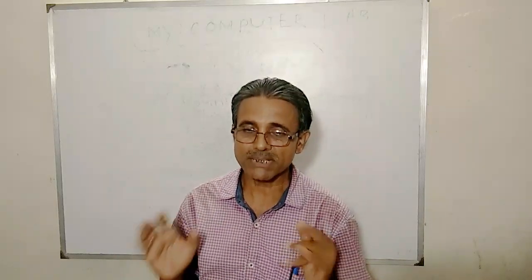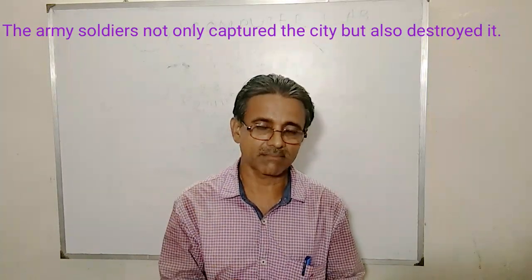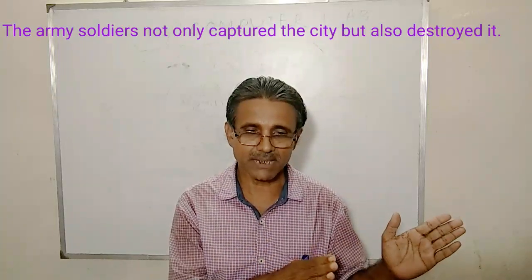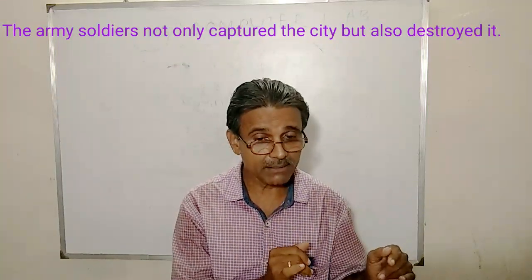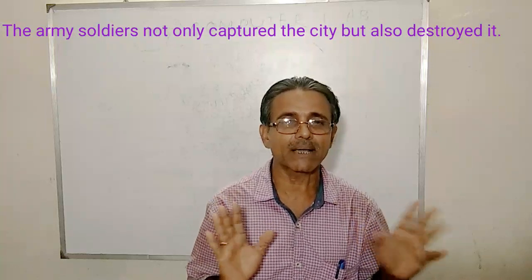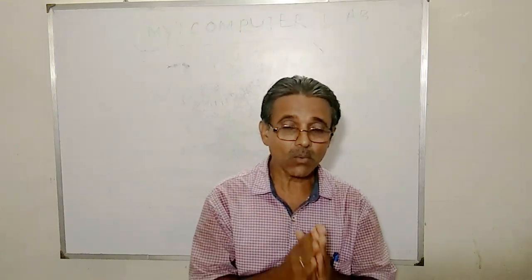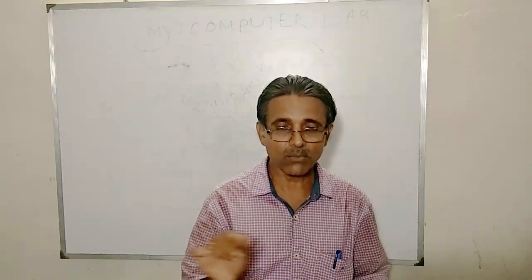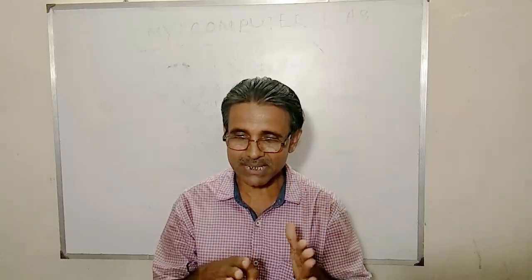For your better understanding, I will give an example of co-relative conjunctions in a compound sentence: 'The army soldier not only captured the city but also destroyed it.' The first independent clause is 'the army soldier captured the city' and the second is 'the army soldier destroyed the city.' We use the co-relative conjunction 'not only...but also' to make a compound sentence.